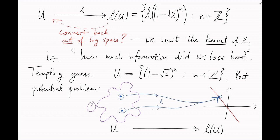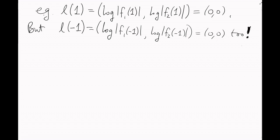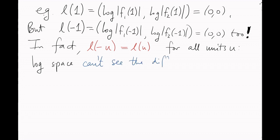The problem is that multiple points in z to join root 2 might have the same image under L. For example, we've already worked out that L of 1 is 0 comma 0. But we didn't take into account the fact that L of minus 1 is also equal to 0 comma 0. In fact, in general, L of minus u is going to be equal to L of u.